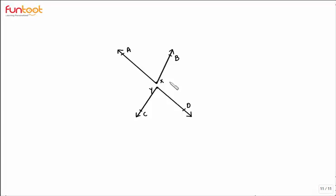An interesting question: does this pair of angles form a pair of vertically opposite angles? No, definitely not — because these angles do not have a common vertex, so they cannot be a pair of vertically opposite angles.